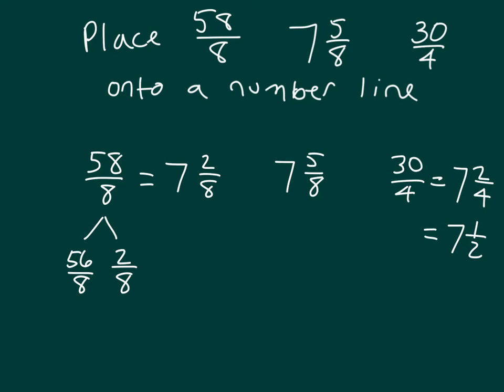7 and 1 half is easier to place onto the number line than 7 and 2 fourths. We could make these all the same denominators as well, so this would be 7 and 4 eighths, 7 and 5 eighths. It actually makes it easier to compare them when we have those same values for it. So we know it's all in between 7 and 8 for the whole numbers, and then we'll continue by breaking that apart into 8 parts.